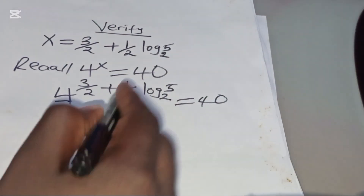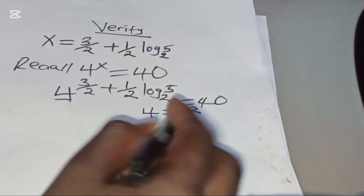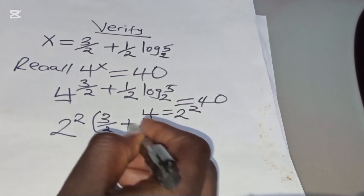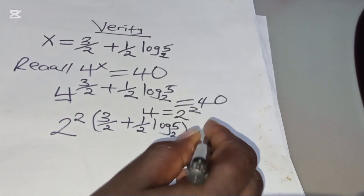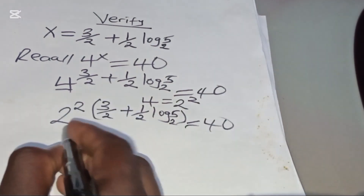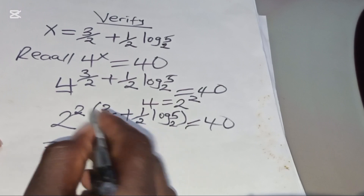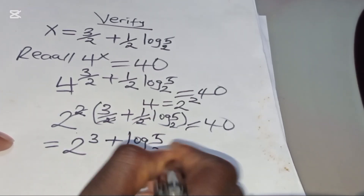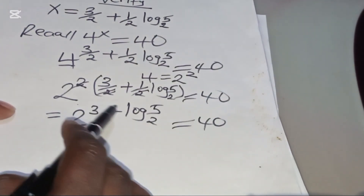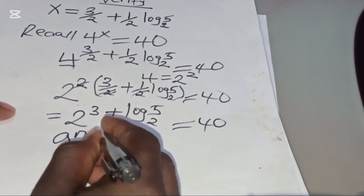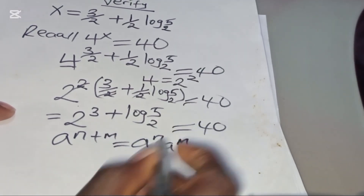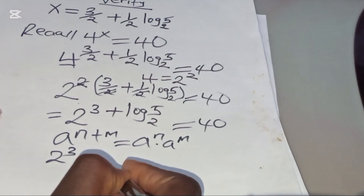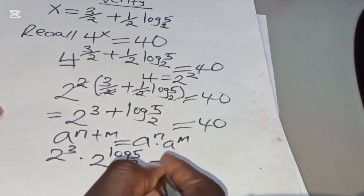Since 4 can be expressed as 2², we substitute to get (2²) to the power (3/2 + ½·log₂(5)). This equals 2 to the power (2×(3/2 + ½·log₂(5))), which simplifies to 2 to the power (3 + log₂(5)). Using the indices identity a^(n+m) = a^n × a^m, this becomes 2³ multiplied by 2^(log₂5), and this should equal 40.